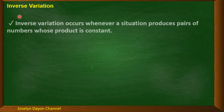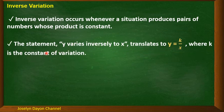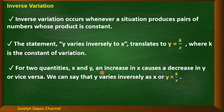Let us describe first about inverse variation. Inverse variation occurs whenever a situation produces pairs of numbers whose product is constant. The statement 'y varies inversely as x' translates to y = k/x, where k is the constant of variation. For two quantities x and y, an increase in x causes a decrease in y, or vice versa. We can say that y varies inversely as x, or y = k/x.